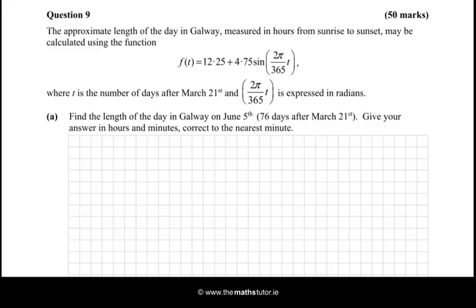Find the length of the day in Galway on June 5th, 76 days after March 21st. What we need to do is get f(76), just substitute it in. So that would be 12.25 + 4.75 times sine, open up my bracket, put in my fraction. We have 2π times 76 on the top and on the bottom we have 365, and then close the bracket.